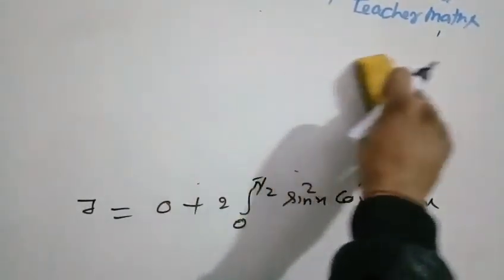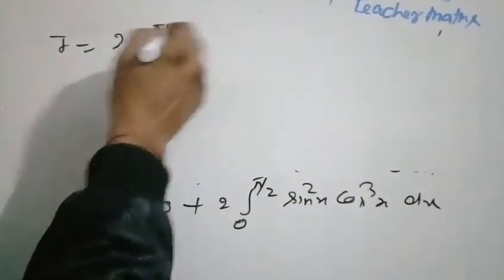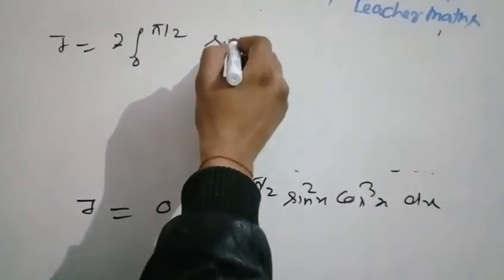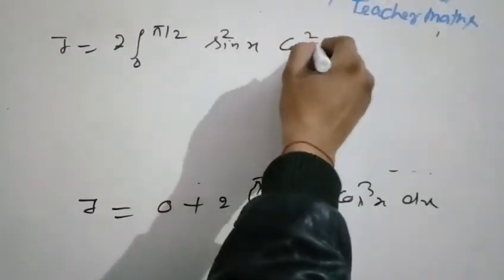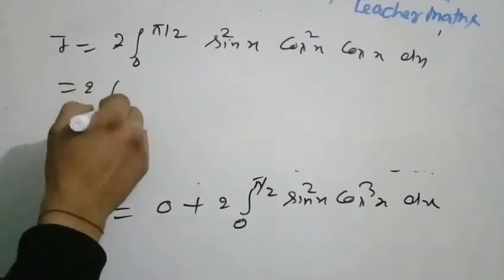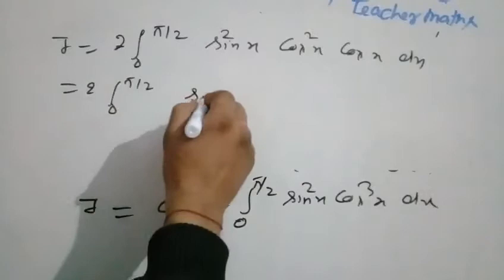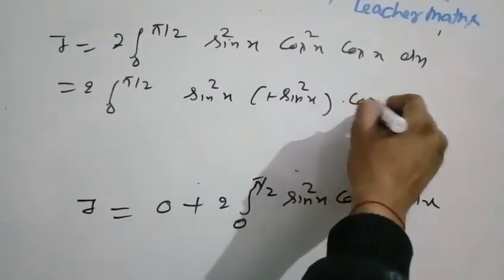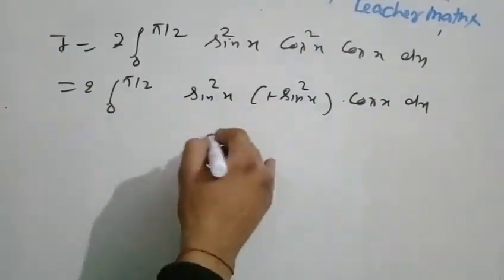I equal to 2 times integral from 0 to pi by 2 of sin squared x cos squared x into cos x dx. We write cos squared x as (1 minus sin squared x), so the integral becomes 0 to pi by 2 of sin squared x times (1 minus sin squared x) times cos x dx.